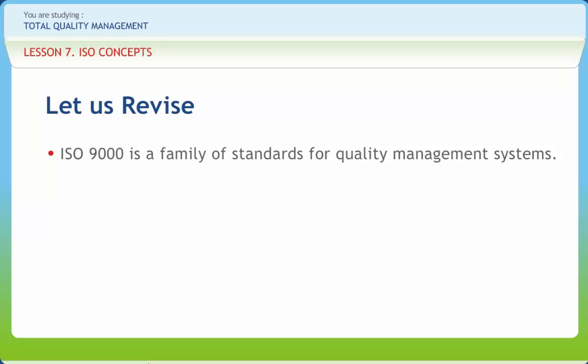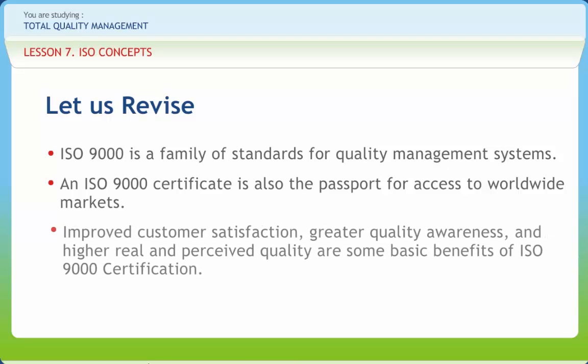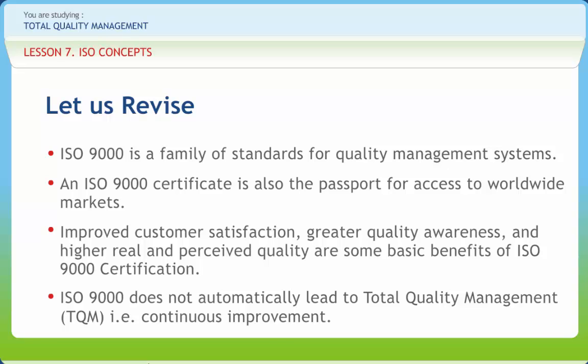The environmental management standards exist to help organizations minimize how their operations negatively affect the environment, cause adverse changes to air, water, or land, and comply with applicable laws and regulations. An ISO 9000 certificate is also the passport for access to worldwide markets. Improved customer satisfaction, greater quality awareness, and higher real and perceived quality are some basic benefits of ISO 9000 certification. ISO 9000 does not automatically lead to total quality management, i.e., continuous improvement. The emphasis on certification tends to overshadow the fact that there is an entire family of ISO 9000 standards. Organizations stand to obtain the greatest value when the standards in the new core series are used in an integrated manner, both with each other and with the other standards making up the ISO 9000 family as a whole.